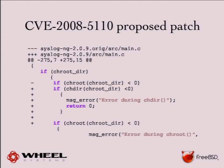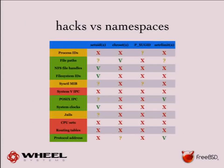In capability mode, you have no access to global namespaces, and in FreeBSD there are quite a few of them. Looking at which techniques protect against accessing various namespaces: for process IDs, setuid and chroot won't help. The p_sugid flag helps a bit by restricting which signals you can send, but you can still list all processes in the system.